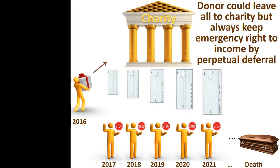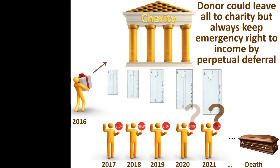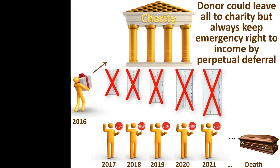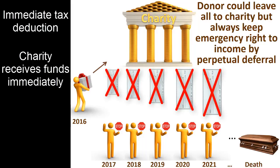The deferred or flexible gift annuity also creates the opportunity for a donor to make a gift but retain an emergency right to receive payments. This can be helpful with a donor who does not anticipate ever needing the payments, but who nevertheless feels insecure about making a gift because of unknown possibilities. The donor can choose to postpone the payments indefinitely, and at death the charity would receive the entirety of the initial gift. Although the amount transferred to the charity is the same as could have been transferred through a bequest, this transaction allows for an immediate income tax deduction and also allows the charity to make immediate use of a portion of the initial gift.